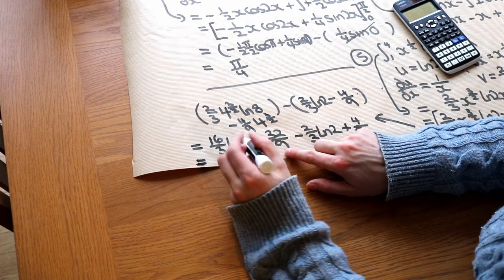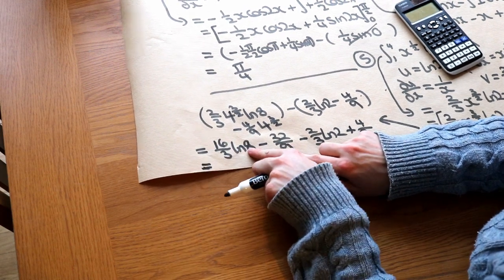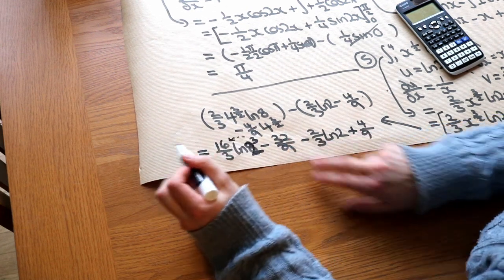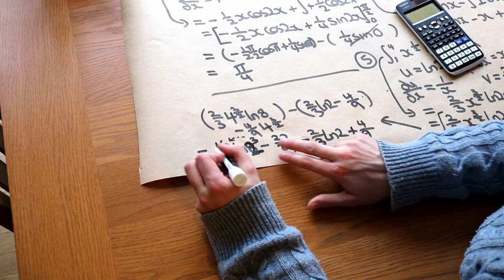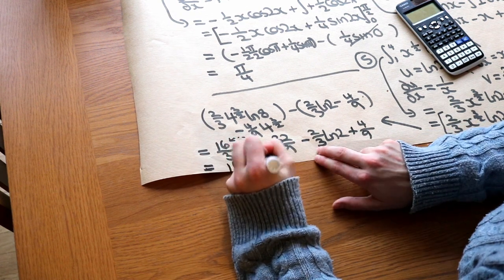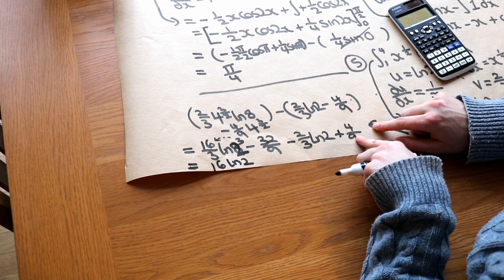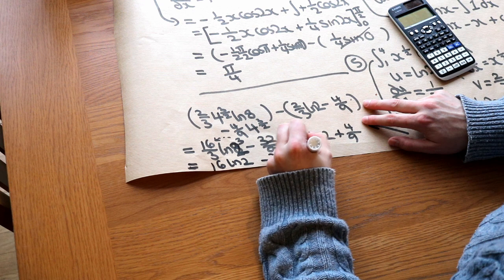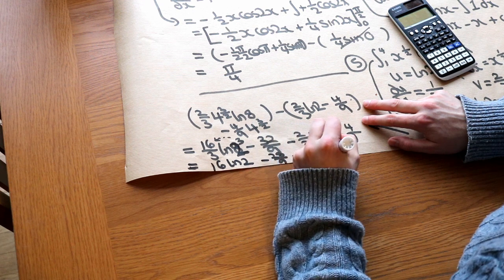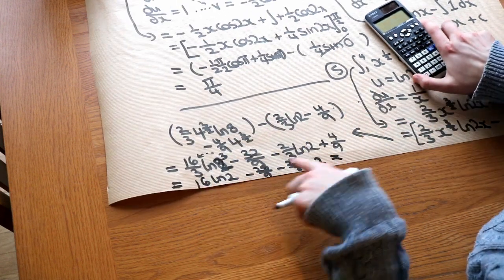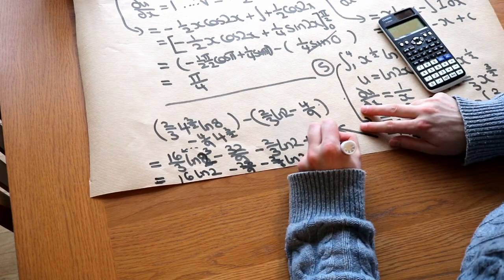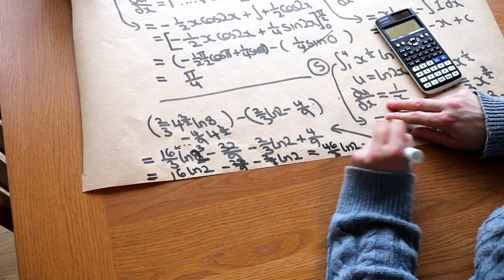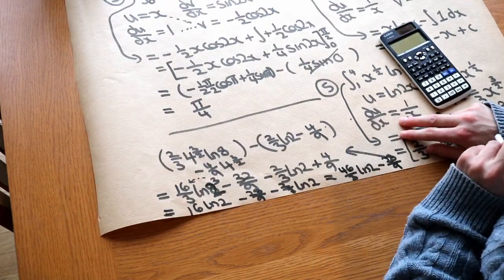Since 8 = 2³, we can write (16/3)·ln(8) as (16/3)·3·ln(2) = 16·ln(2). Then −32/9 + 4/9 = −28/9. Combining the ln(2) terms: 16·ln(2) − ⅔·ln(2) = (46/3)·ln(2). So the final answer is (46/3)·ln(2) − 28/9.